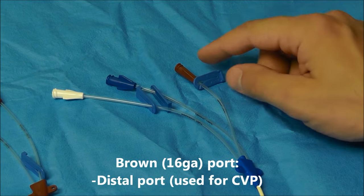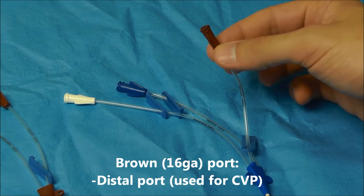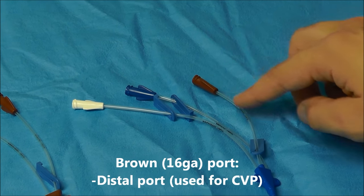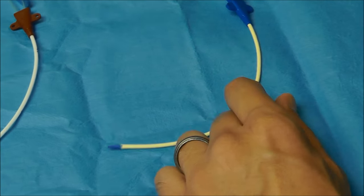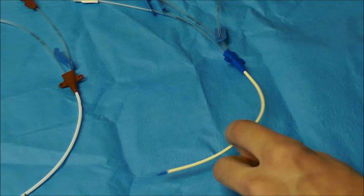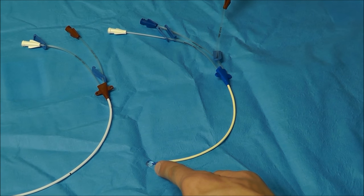The brown port on these catheters is called the distal port because the opening goes all the way to the tip of the distal catheter, and I can demonstrate that right now. If I hook something up to this brown port, you're going to see fluid is going to come out right here out of the distal tip.